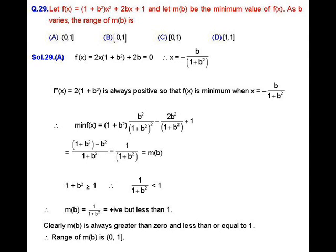When we compute the minimum value of the function by substituting x = -b / (1 + b²) into the given function, we get f minimum = (1 + b²) · b² / (1 + b²)² − 2b² / (1 + b²) + 1, which simplifies to 1 / (1 + b²).